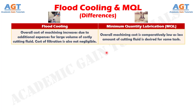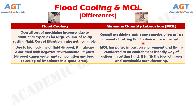Number seven: in flood cooling, the overall cost of machining increases due to additional expenses for large volume of costly cutting fluid, and the cost of filtration is also not negligible. Whereas in minimum quantity lubrication, the overall machining cost is comparatively low, as less amount of cutting fluid is required for the same task.